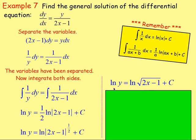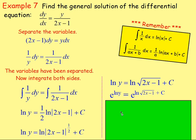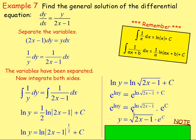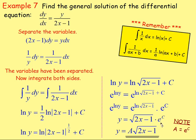To get rid of ln, use the inverse — exponentials. So let's take e of both sides. e to the power of ln y equals e to the power of ln(root(2x minus 1)) plus c. Because you've got e to the power of something plus something, you can split that up: e to the power of ln(root(2x minus 1)) times e to the power of c. e and ln cancel, leaving y equals root(2x minus 1) times e to the power of c. You tend not to leave it as e to the power of c — just write that as a. So y equals a times the square root of (2x minus 1).